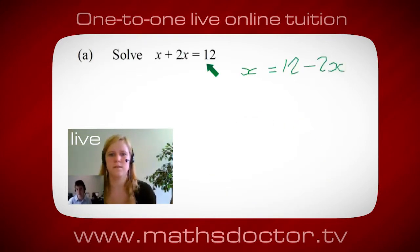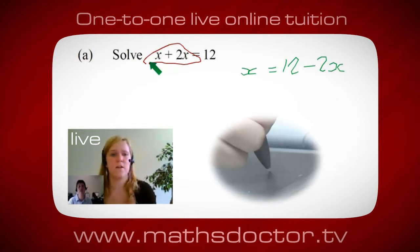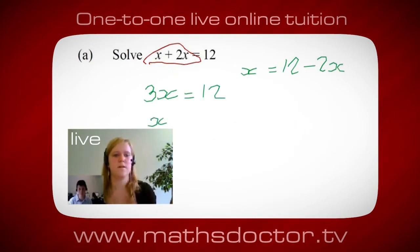Okay, so a lot of the time we want to get x by itself, but what we want to do first is get all of these x's together. Can you see anything we can do with this? Get all these together in one place. Oh, okay, it's 3x, isn't it? Yeah, absolutely. So 3x equals 12. Oh, and so x equals 4. Brilliant, spot on, well done.